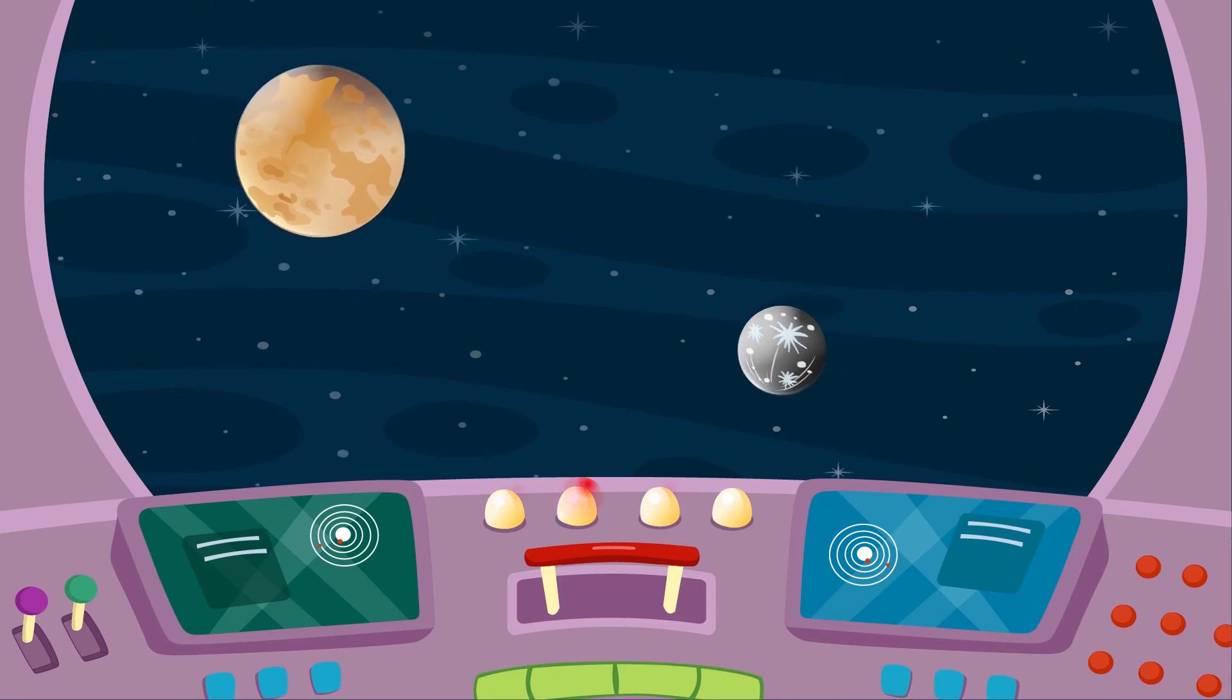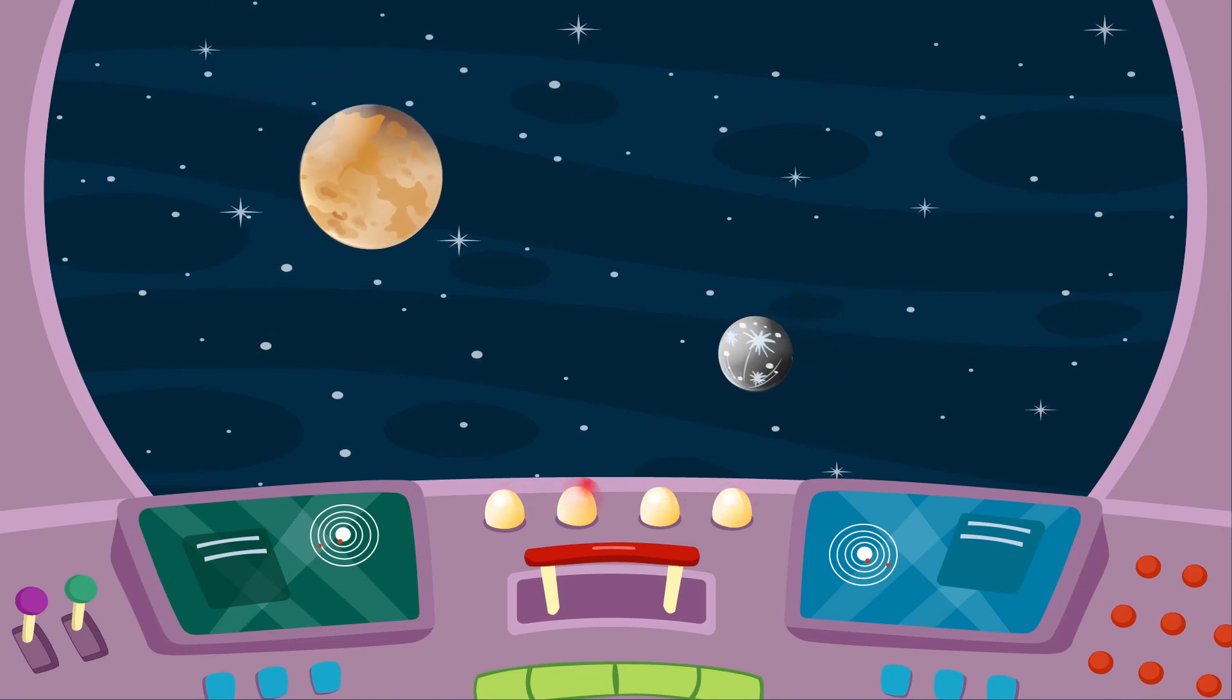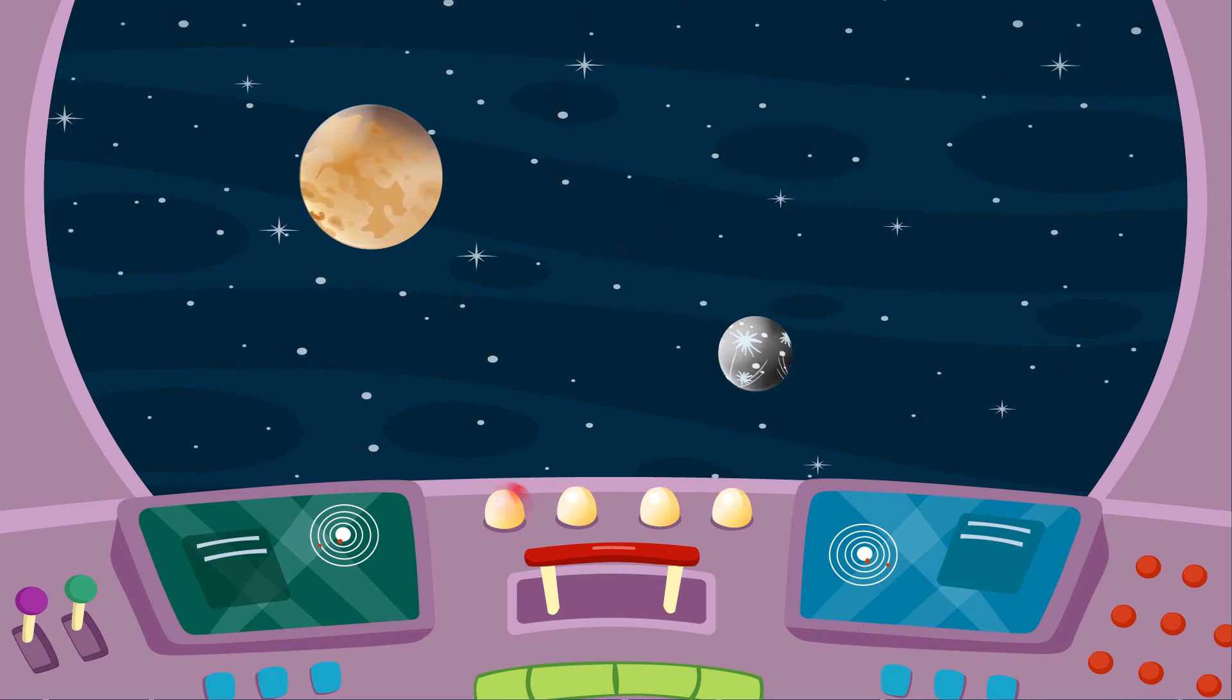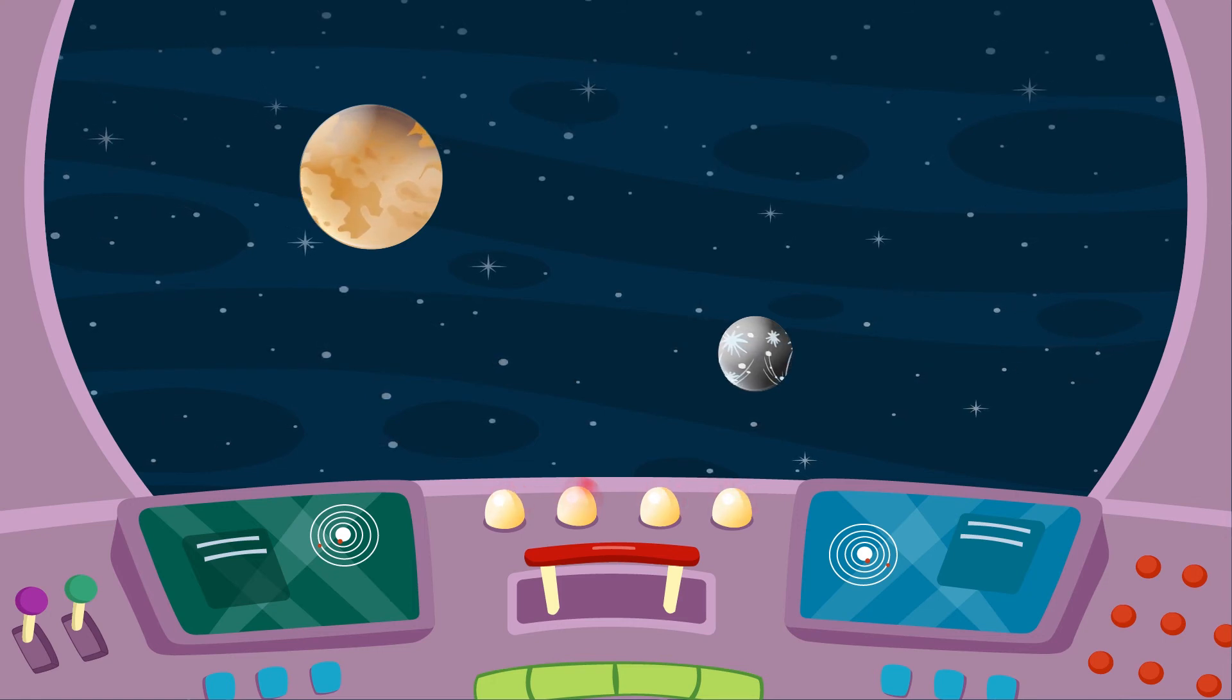On their way back home, friends fly past Mercury and Venus. Mercury is the smallest planet in the solar system and also the closest to the Sun. This is why the length of Mercury's year is only 88 Earth days.